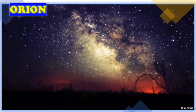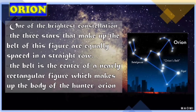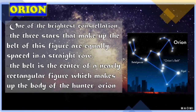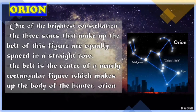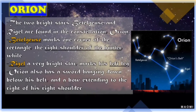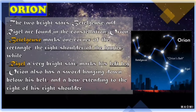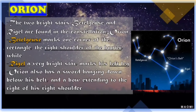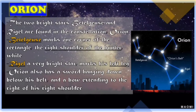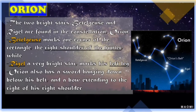Next constellation is Orion, one of the brightest constellations. The three stars that make up the belt of this figure are equally spaced in a straight row. The belt is the center of a nearly rectangular figure which makes up the body of the hunter Orion. Orion has two bright stars: Betelgeuse and Rigel. Betelgeuse marks the right shoulder of the hunter, while Rigel, a very bright star, marks his left leg. Orion also has a sword hanging down below his belt and a bow extending to the right of his right shoulder.